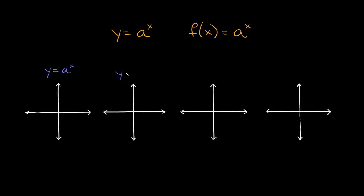There are basically four scenarios. The first one is y is equal to a to the x. The second one is y is equal to a to the negative x. The third one is y is equal to negative a to the x, and then the last one is y is equal to negative a to the negative x.